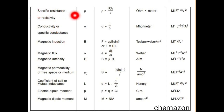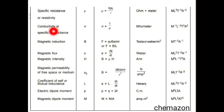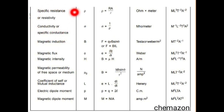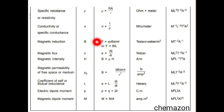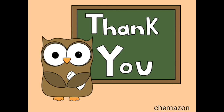Specific resistance or resistivity is given by rho = R·A / L, and we get the dimensions accordingly. Conductivity or specific conductance will also be helpful in electrochemistry when we study conductance. Electric dipole moment is Q into 2L, which will be useful when finding the dipole moment of organic molecules. So here we come to the end of today's lecture. Thank you so much.